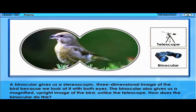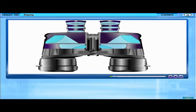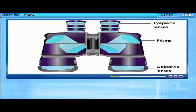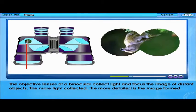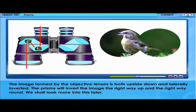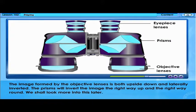How does the binocular do this? Binoculars consist of three main parts: eyepiece lenses, prisms, and objective lenses. The objective lenses of a binocular collect light and focus the image of distant objects. The more light collected, the more detailed is the image formed. The image formed by the objective lenses is both upside down and laterally inverted. The prisms will invert the image the right way up and the right way round.